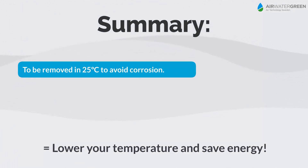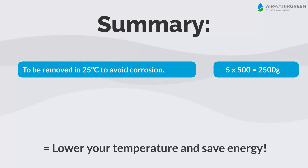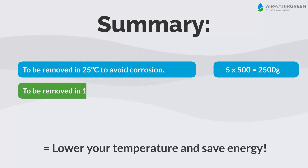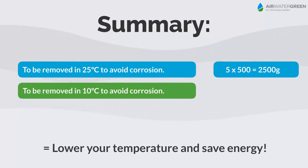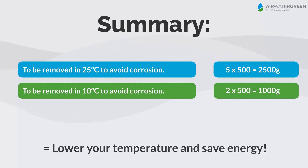Summary — Moisture to be removed at 25 degrees Celsius to avoid corrosion: 5 grams per cubic meter × 500 cubic meters = 2500 grams. Moisture to be removed at 10 degrees Celsius to avoid corrosion: 2 grams per cubic meter × 500 cubic meters = 1000 grams.